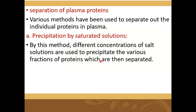Separation of plasma proteins. Various methods have been used to separate out the individual plasma proteins. The first is precipitation by saturated solution — separation of proteins by saturated solution. You will perform this in the lab: identification of albumin and globulin by fully saturated or half saturated solution. By this method, different concentrations of salt solutions are used to precipitate various fractions of proteins, which are then separated.